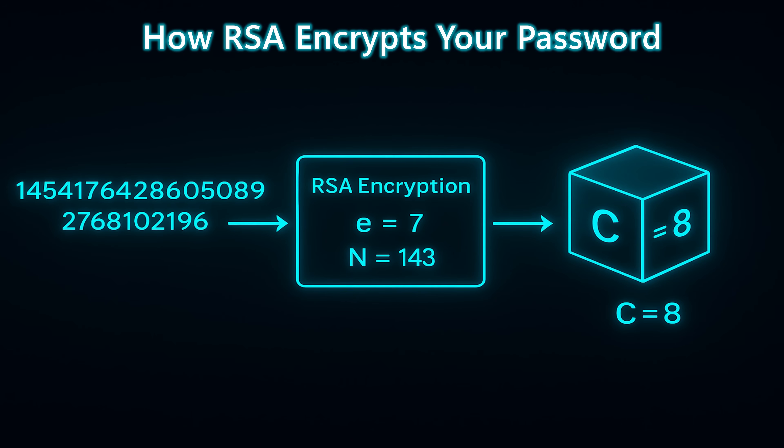The encryption step is straightforward: raise the message integer to the power e and reduce it modulo n. When we calculate that for our example, the ciphertext that comes out is 8. This might look simple, but in classical cryptography, the security of RSA relies entirely on one assumption — that an attacker cannot factor n. In the next slide, we'll peel back the curtain and show exactly how this calculation works, and then use Shor's algorithm to break this RSA encryption wide open.